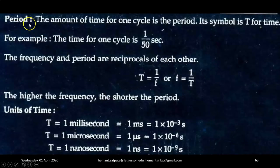Next concept is period. The amount of time for one cycle is known as the period. Its symbol is capital T for time. For example, the time for one cycle is 1/50 second. The frequency and period are reciprocals of each other: T = 1/f or f = 1/T. The higher the frequency, the shorter the period.